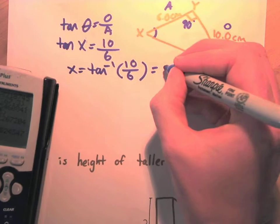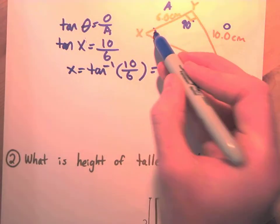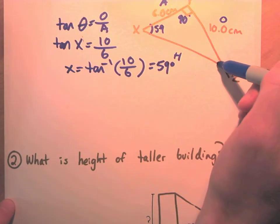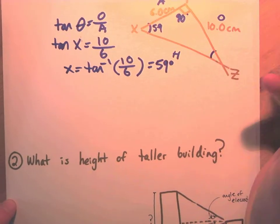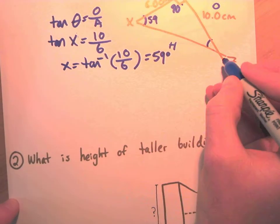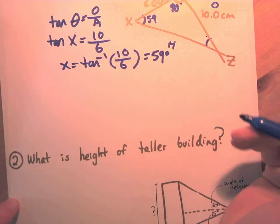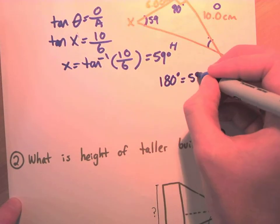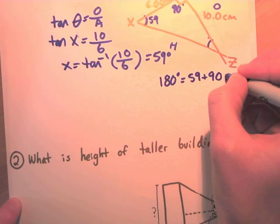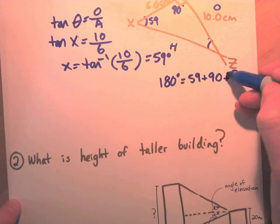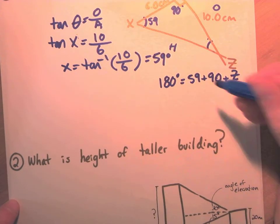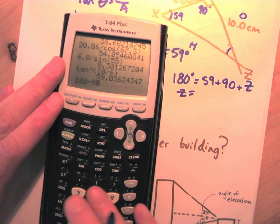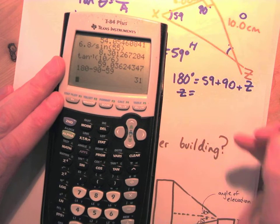Typing tan⁻¹(10/6) into the calculator gives us 59 degrees. Now we have two angles. Using the quick shortcut: 59 + 90 + Z = 180, so Z = 180 − 90 − 59 = 31 degrees. We've now found all three angles.